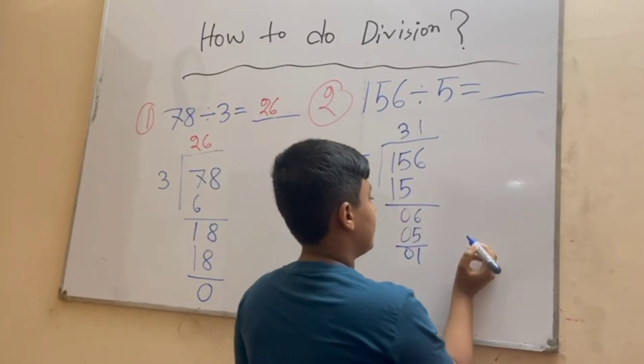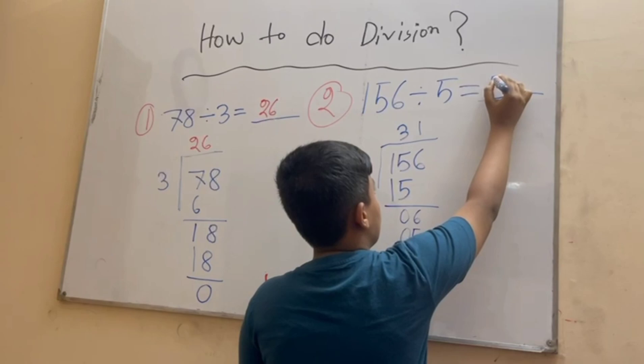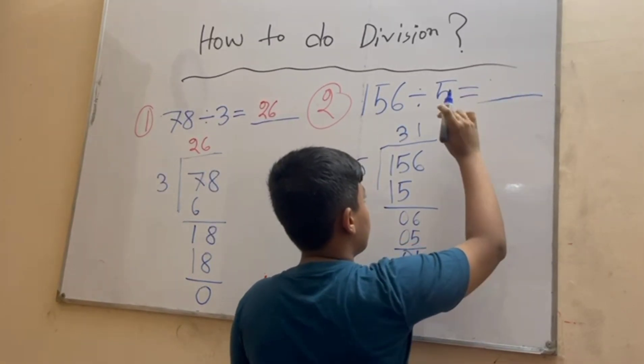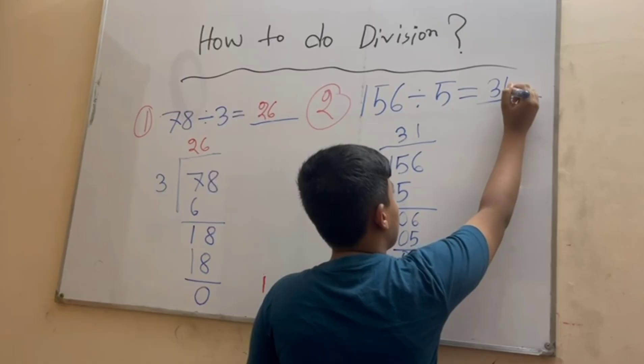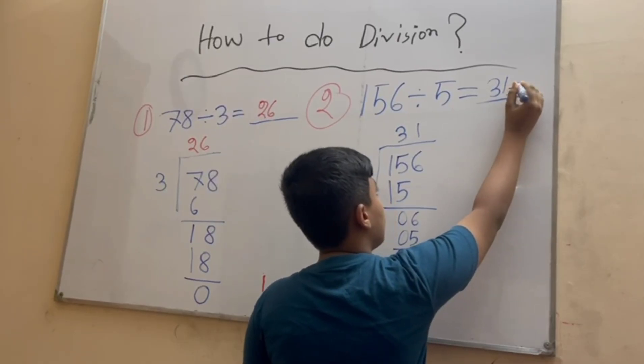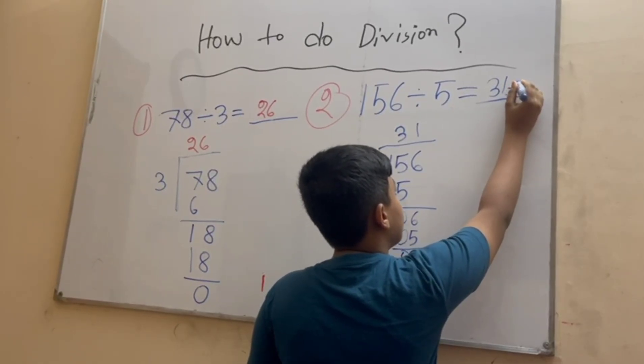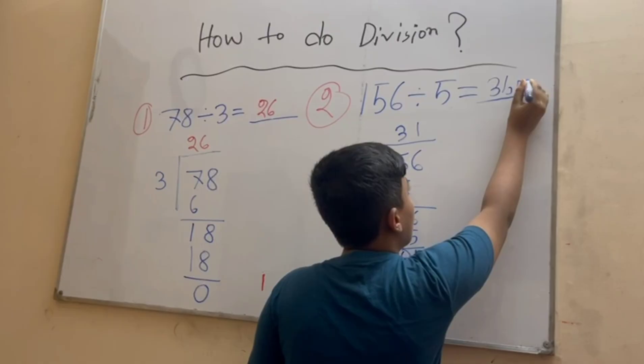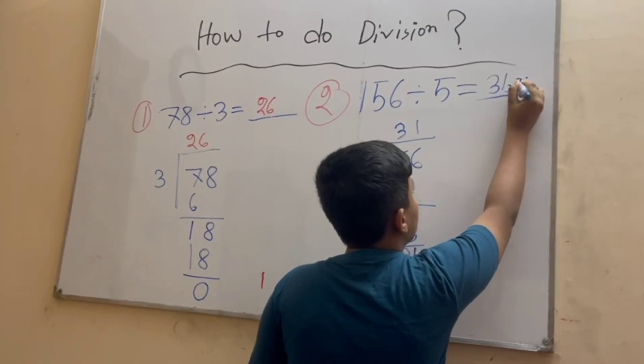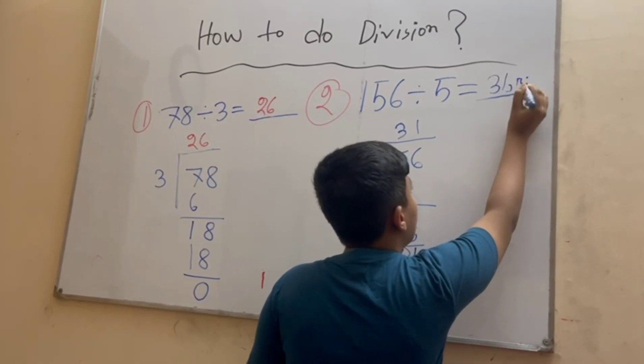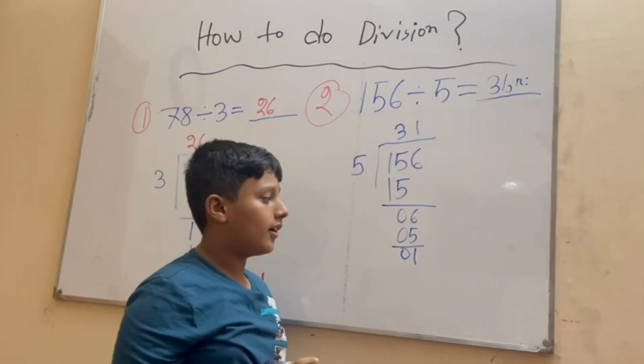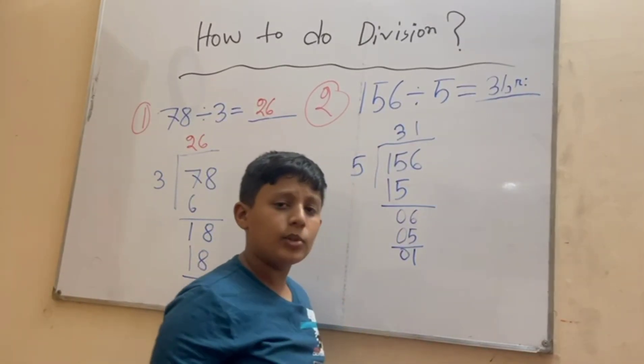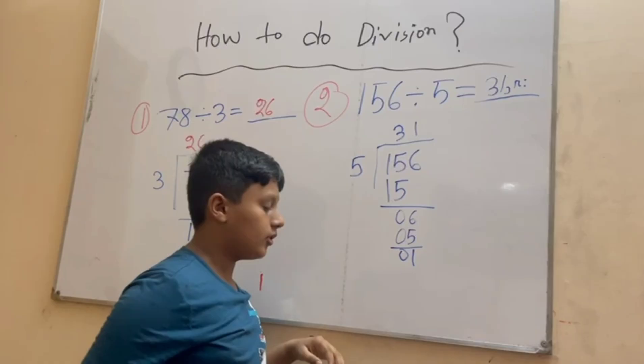We have to write it like this. First we'll write the answer 31, and now we have to give a comma and then R colon. What does R stand for? R stands for remainder. So we have a remainder of one, so we'll write one.